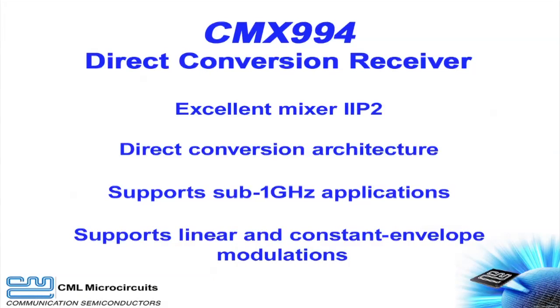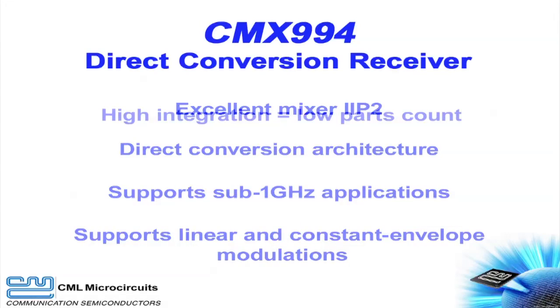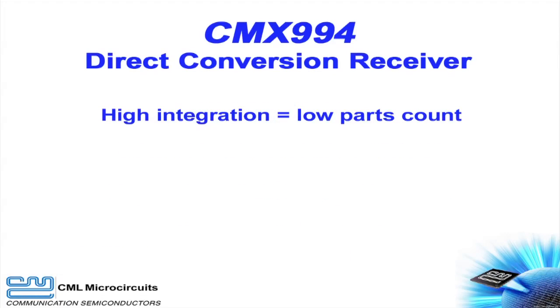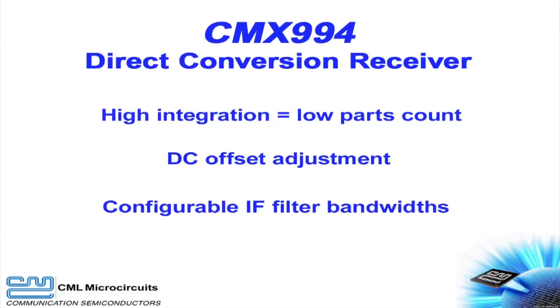Both linear and constant envelope modulations are supported by the CMX994. The integrated LO synthesizer and LNA with gain control minimizes external parts count. Software adjustable DC offsets allow for optimal performance. Configurable bandwidth IF filters support multiple channel bandwidths. And the CMX994 also offers low power operation and a small package size.